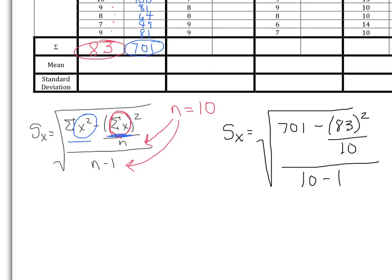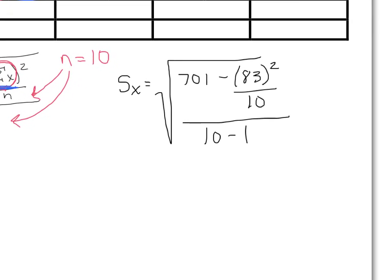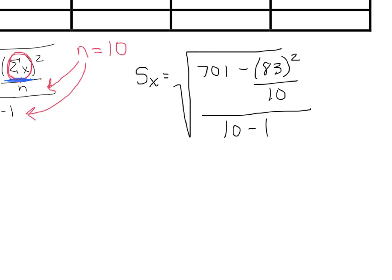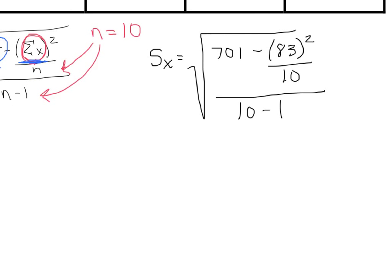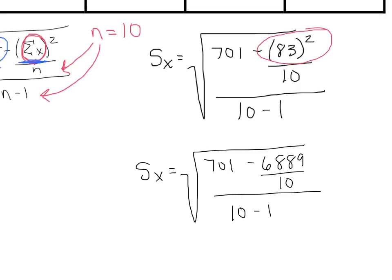Order of operations here though is very important. I like to put this in my calculator in a couple of different steps. The first thing that I like to do is take this 83 squared value and put that in my calculator. If I take 83 times 83, I get 6,889. Then I like to pause at that point, clear my calculator, and write out my equation one more time. Next, I see I can take that 6,889 divided by 10. I can do that in my calculator as well. Then I like to clear the calculator, write it down one more time. This is just to really help me with order of operations.